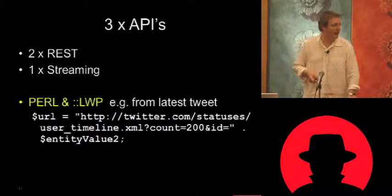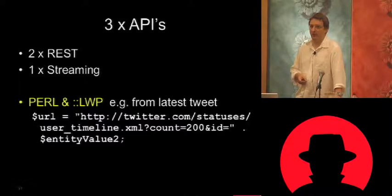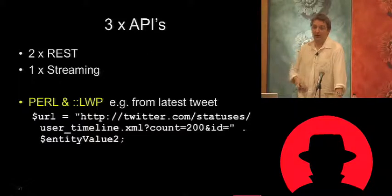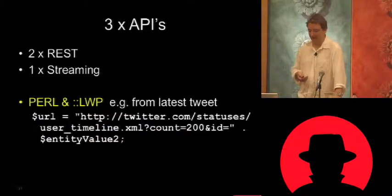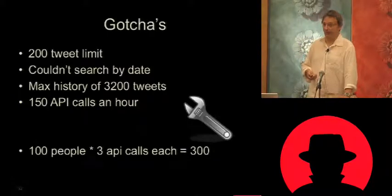You've got an entity value there which is the person you're looking to grab tweets from. If anyone wants the code for playing around with this, I plan to put it on my website, SecurityGeek — but the E's are threes. You can do a lot of playing around with that. It's not all plain sailing — some things I wish were implemented in the Twitter API aren't, like searching by date. You kind of have to make that yourself, but Perl and LWP really work pretty well.